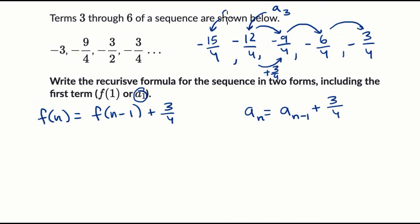That is a sub two. And then if I subtract three fourths again, I get negative 18 over four. That is a sub one, or also going to be equal to f of one. Now negative 18 over four is the same thing as negative nine halves. So we could write f of one is equal to negative nine halves. Or over here, we could say a sub one is equal to negative nine halves. And we're done.